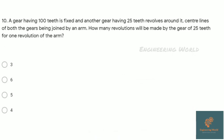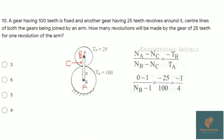Next, a gear having 100 teeth is fixed and another gear having 25 teeth revolves around it, center lines of both gears being joined by an arm. How many revolutions will be made by the gear of 25 teeth for one revolution of the arm? This is the arrangement: sun as A, planet as B, and consider C as the arm. There is a simple formula which we will see in the special GATE IES classes on the same YouTube channel.